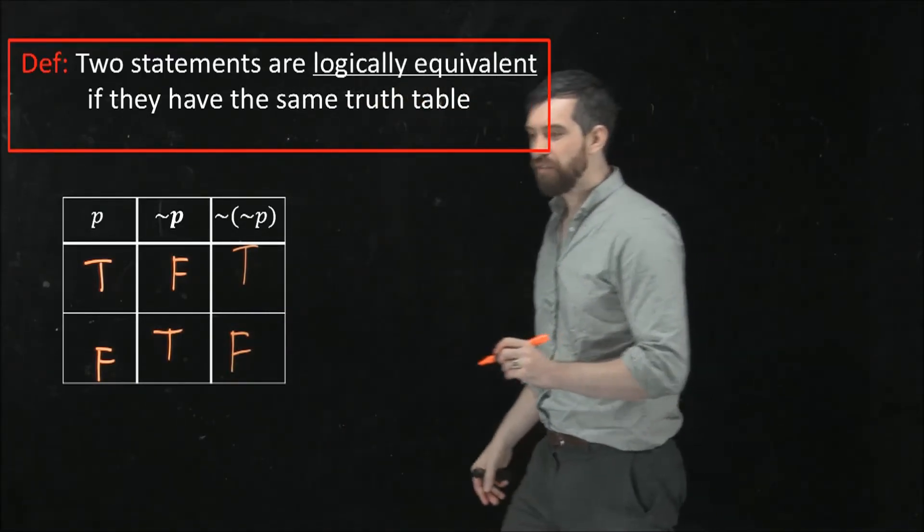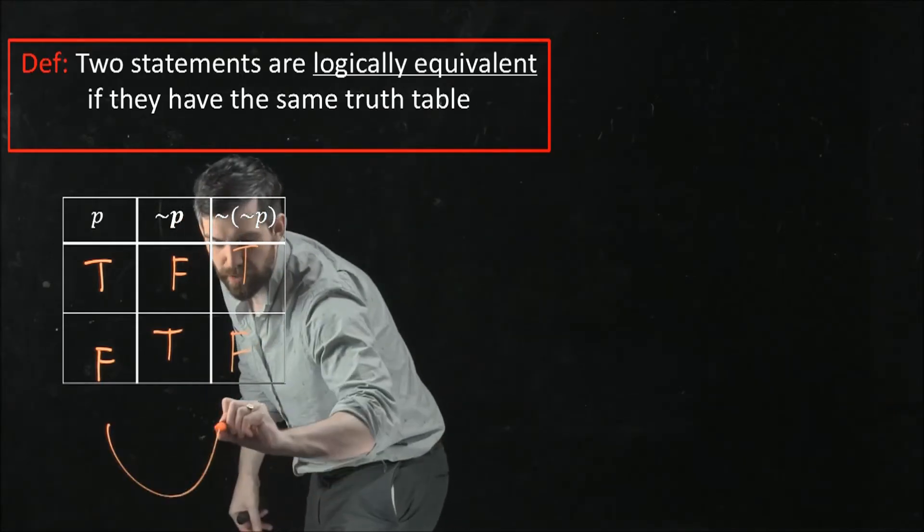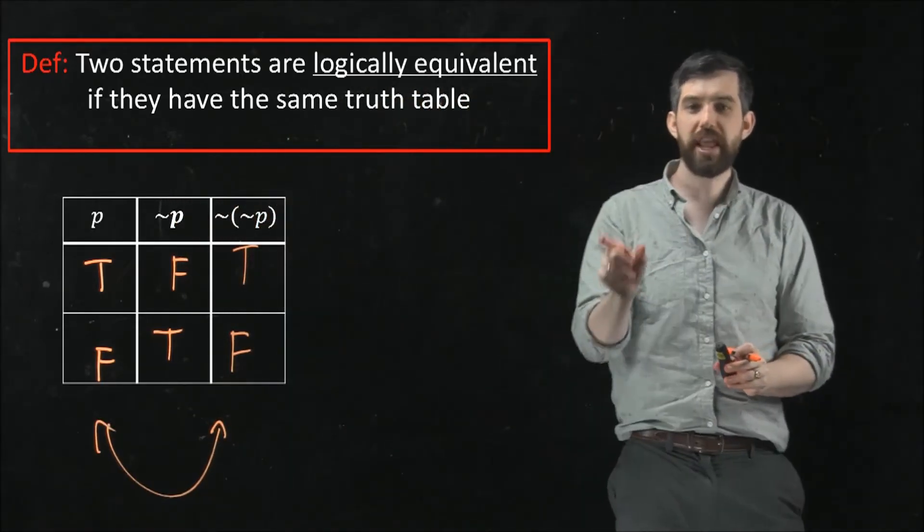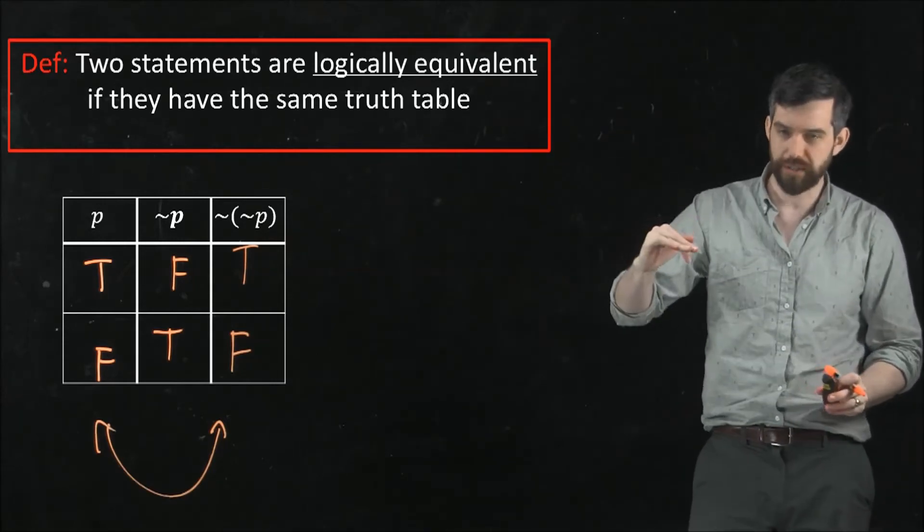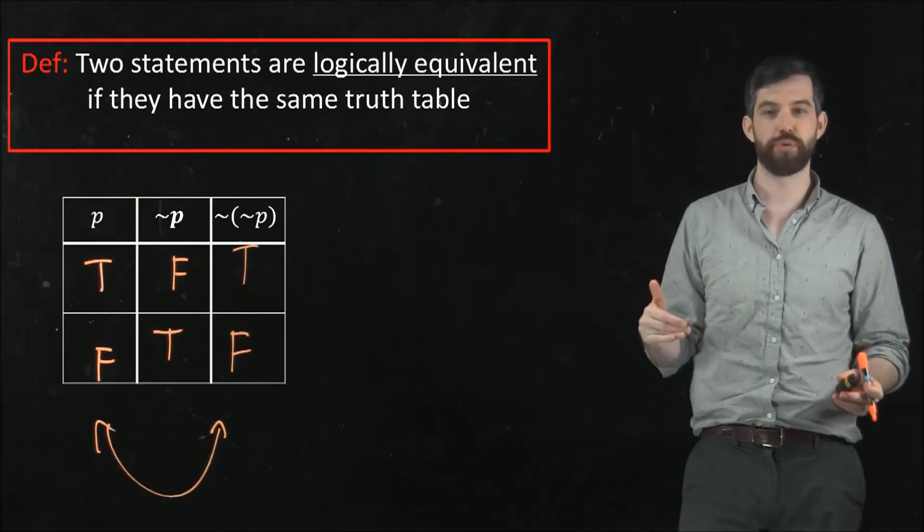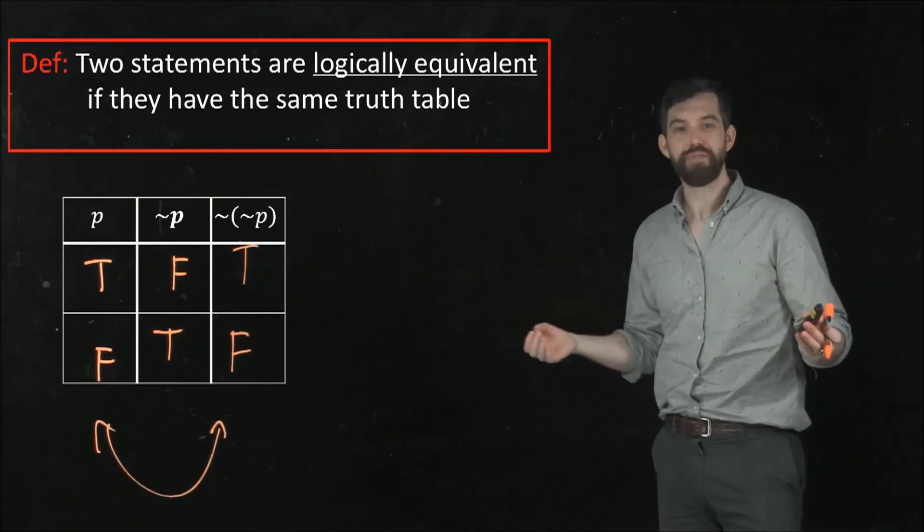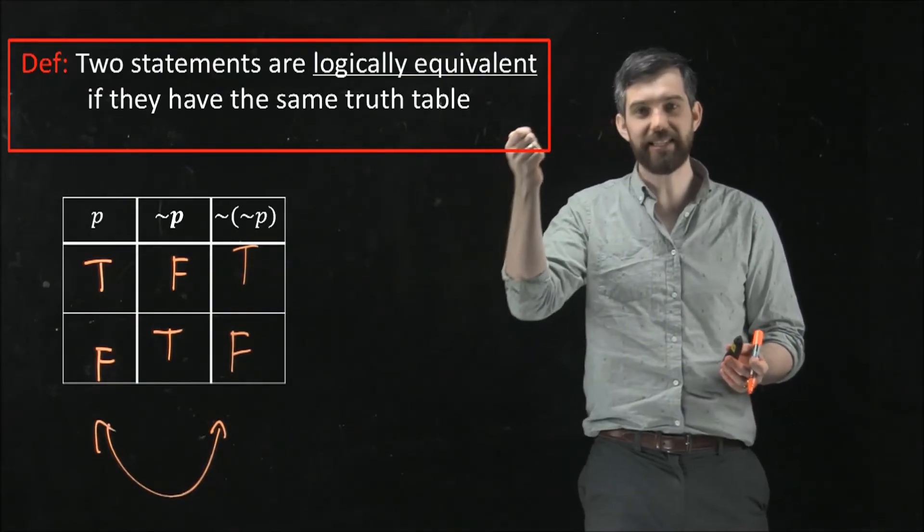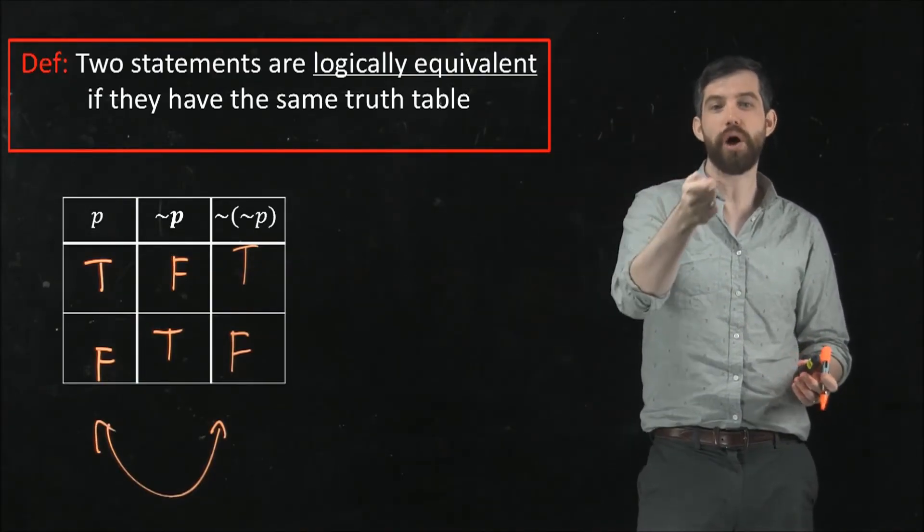And then what I've noticed here is that these two things are going to be the same thing. That the truth table for p, which is a true and a false, is the same thing as the truth table for not not p, again a true or false. So this recovers for us the idea that p is the same thing as not not p.